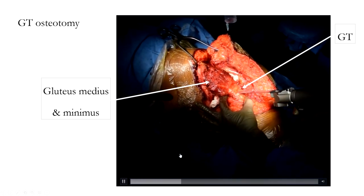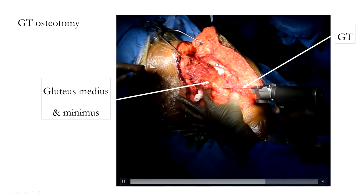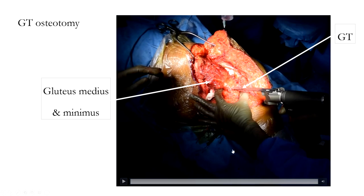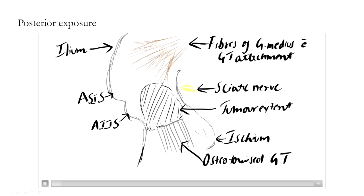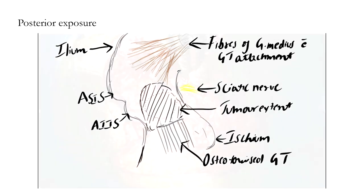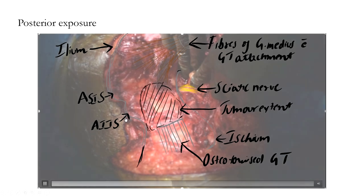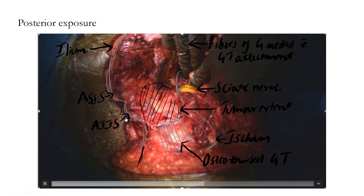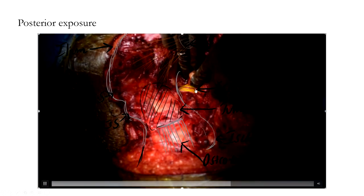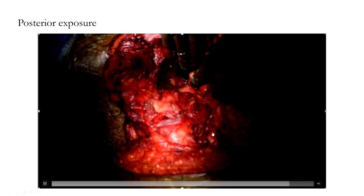A greater trochanter osteotomy was then performed to flip the gluteus medius and minimus insertions and expose the posterior ilium. Once completed and the fibres of the gluteus medius were elevated, the tumour area along the quadrangular plate was identified. A pictorial representation shows the ilium, anterior superior iliac spine, and anterior inferior iliac spine anteriorly, and the sciatic nerve and ischium posteriorly. On the table, the sciatic nerve is visible posteriorly, the ASIS anteriorly, and the osteotomy site and greater trochanter inferiorly — this formed the main area of tumour mass posteriorly.